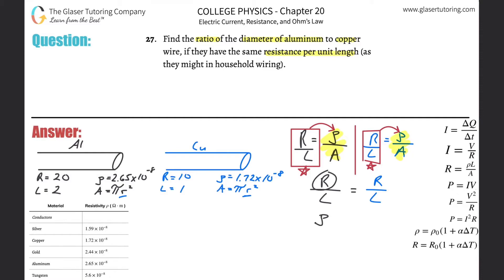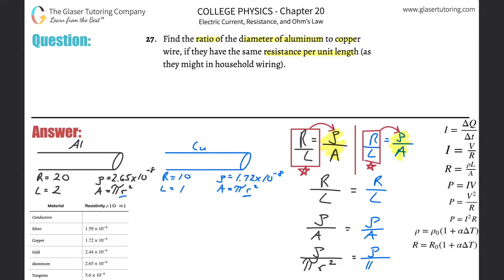By substitution, instead of writing R/L for aluminum I can write ρ/A for aluminum, and set that equal to ρ/A for copper. Now expanding the area as πr², we get: resistivity of aluminum divided by πr²_Al equals resistivity of copper divided by πr²_Cu.